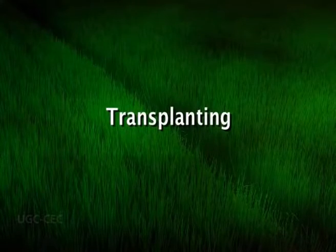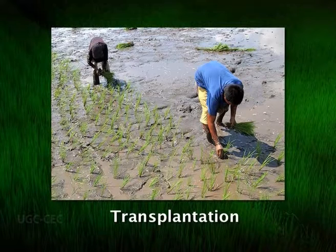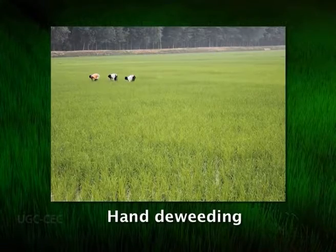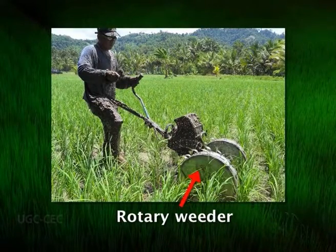Transplanting: the 20 to 28 days old seedlings are ready for transplantation. Three to four seedlings are pushed into mud mounds by hand and are usually planted in regular lines. Weeding of rice is usually done by hand, but there are many mechanical devices like the rotary weeder.